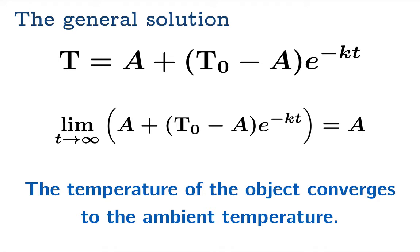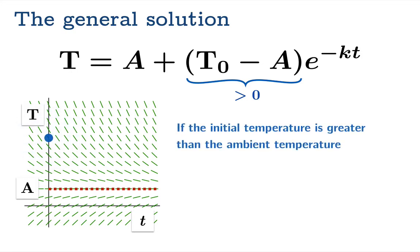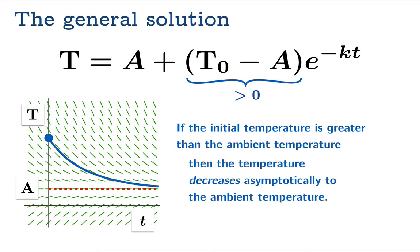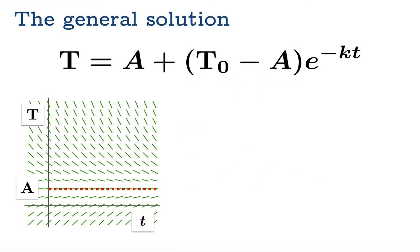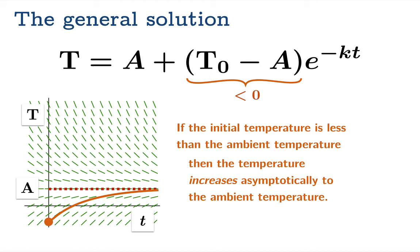This is, of course, something that should be intuitively clear. When you pull an object out of the oven or the refrigerator, it either cools down or heats up to the ambient temperature over time. Of course, if the initial temperature is greater than the ambient temperature, then the temperature decreases asymptotically to the ambient temperature.